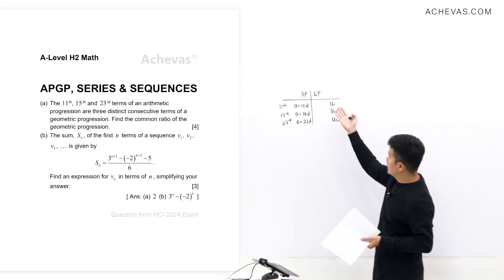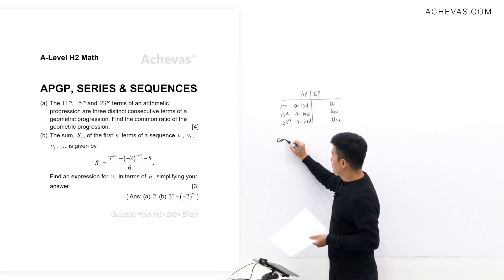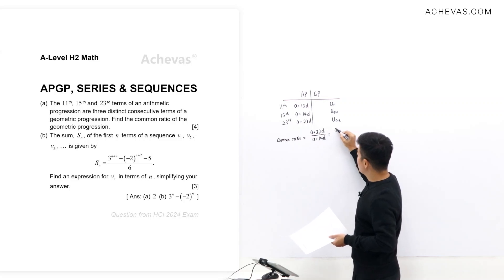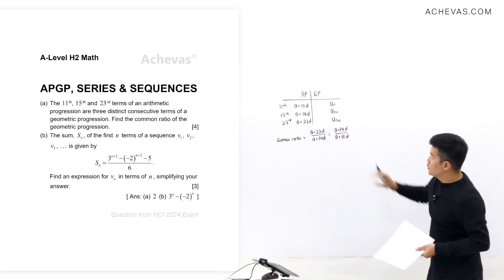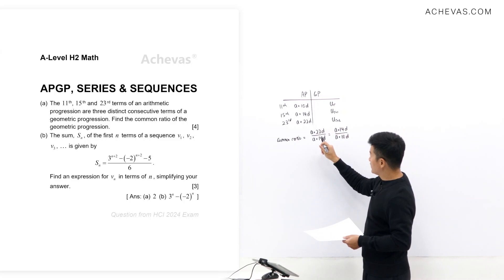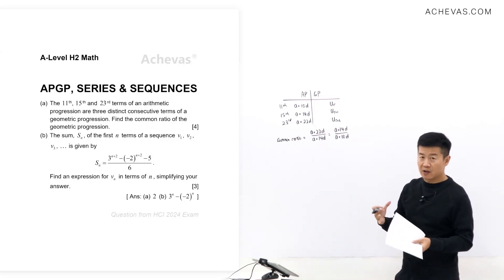So the common ratio of the GP will be (a + 22d) / (a + 14d), and it can also be expressed as (a + 14d) / (a + 10d). Making use of this equation, we will try to express a in terms of d, or d in terms of a — let's see which is more convenient.